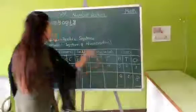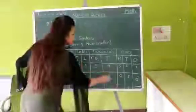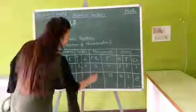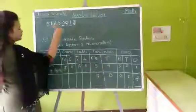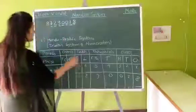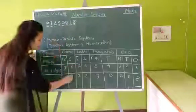One is tens. Zero is in hundred. Another zero is in thousand. Nine is in ten thousand. Two is in lakh. Seven is in ten lakh. Eight is in crore.